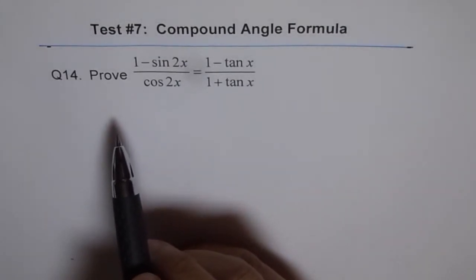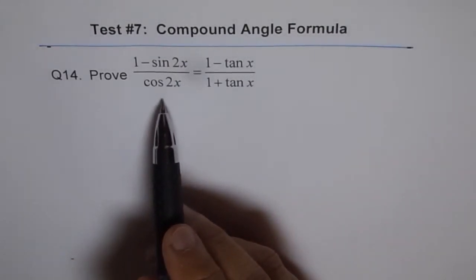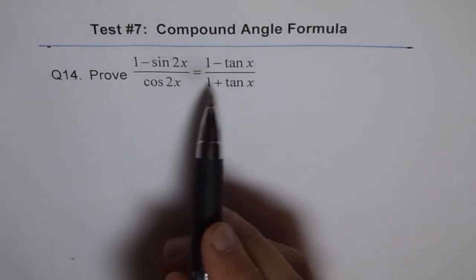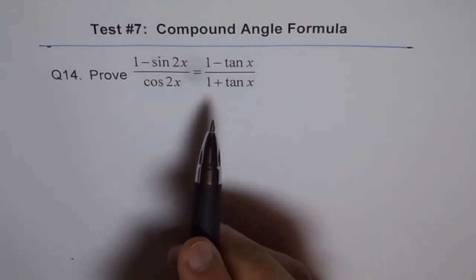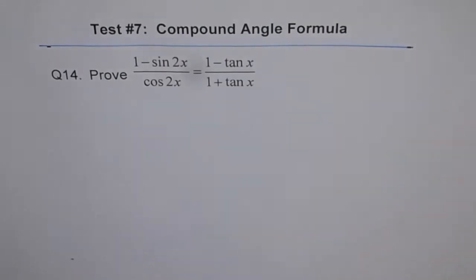1 minus sine 2x divided by cos 2x equals 1 minus tan x over 1 plus tan x.